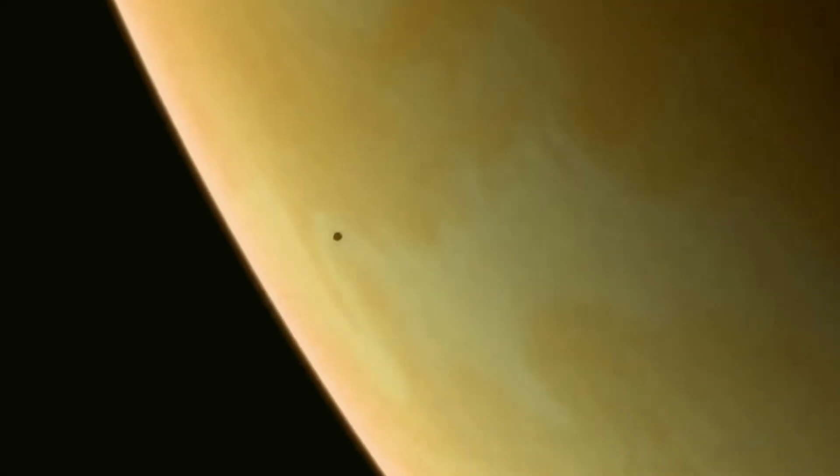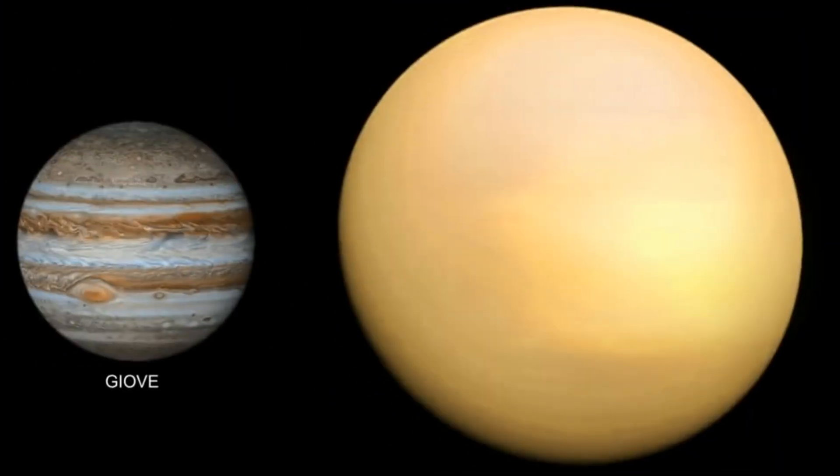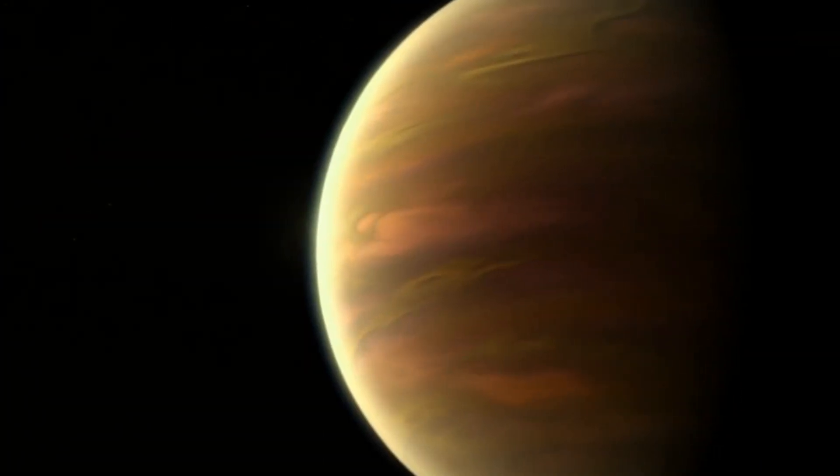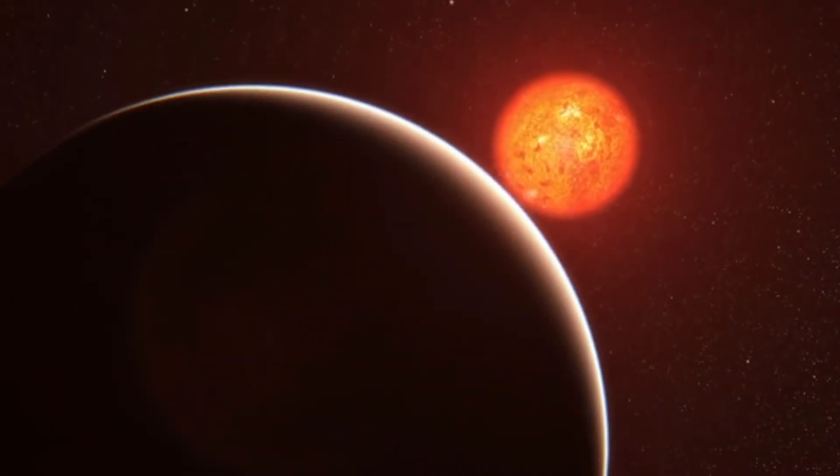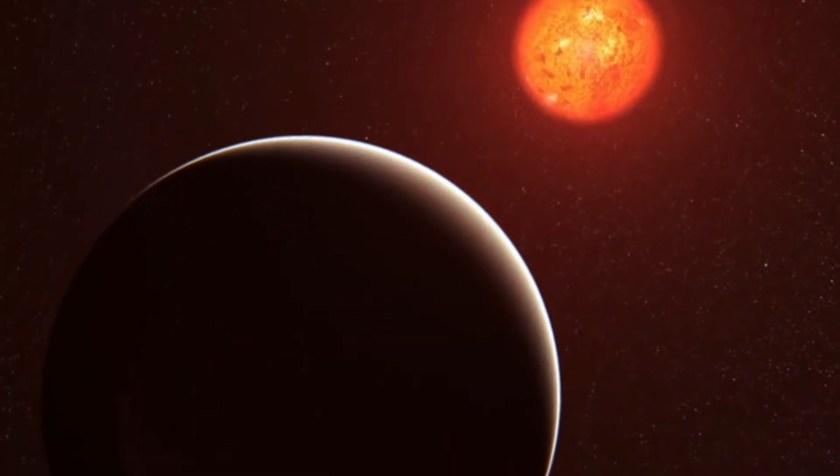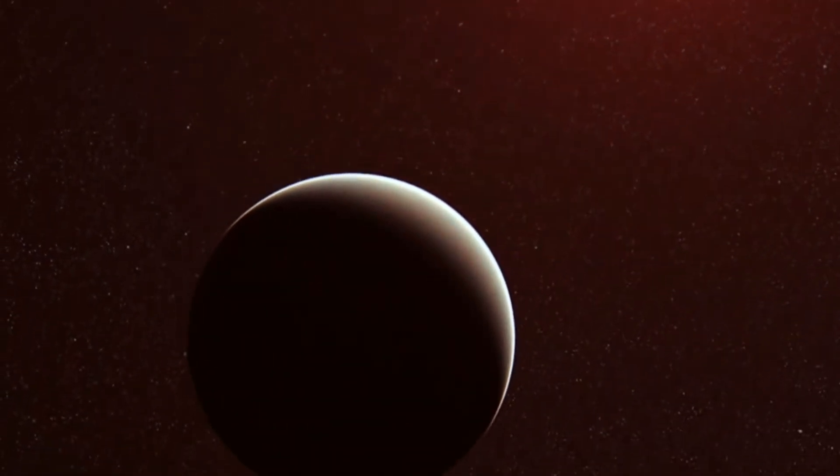Then there's HAT-P-67b, another heavyweight contender with a radius over twice that of Jupiter. So the race for the title of the largest planet is definitely crowded. Why all the uncertainty, you ask?